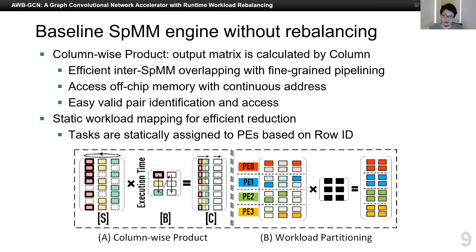We first designed the baseline architecture for power-law SpDMM. This design solves most of the problems except the rebalancing problem. We use column-wise products in our design, which means all matrices are calculated by column. There are three benefits. First, it is easy to overlap consecutive SpDMM kernels with fine-grained pipelining, so that on-chip storage and off-chip communication demand can be reduced significantly. Second, using column-wise products, the off-chip memory access for all matrices is always with continuous addresses, resulting in higher bandwidth utilization. Third, it is easy to identify valid pairs and access them. For initial workload mapping, we use static mapping based on row ID, meaning each PE works on certain rows, making result aggregation and reduction easier.